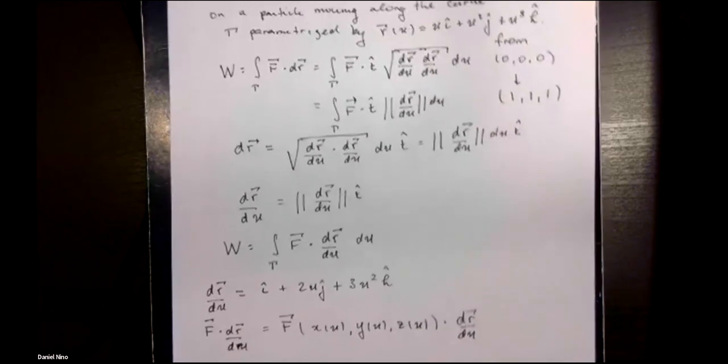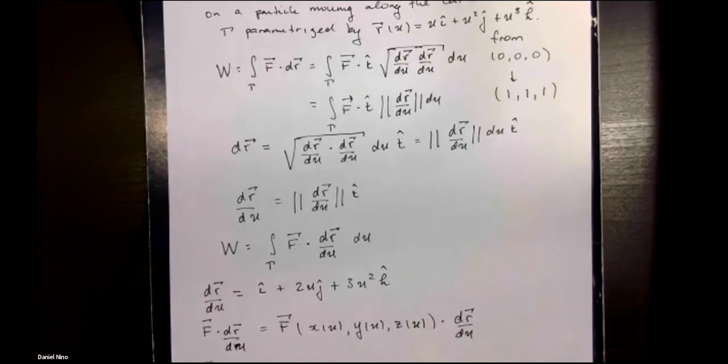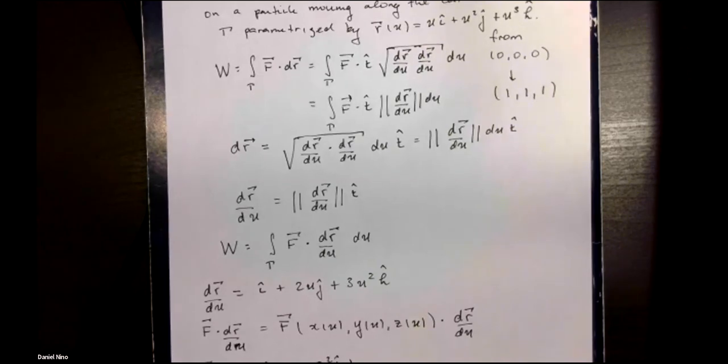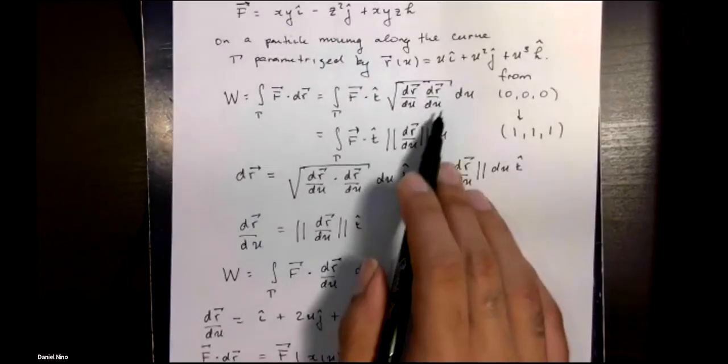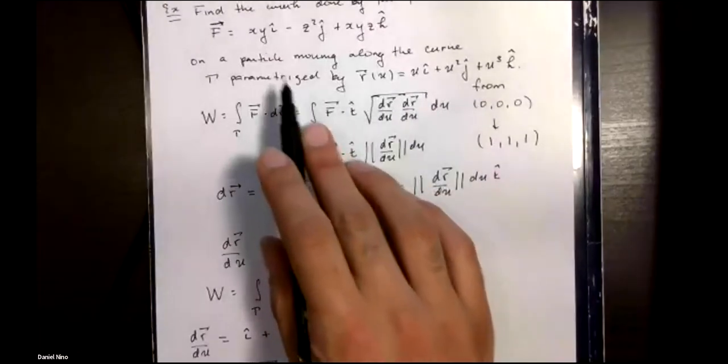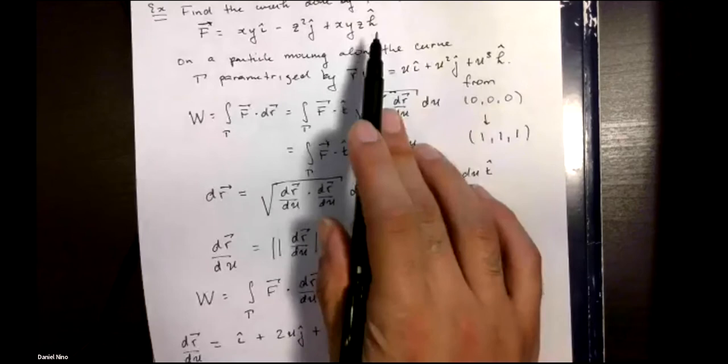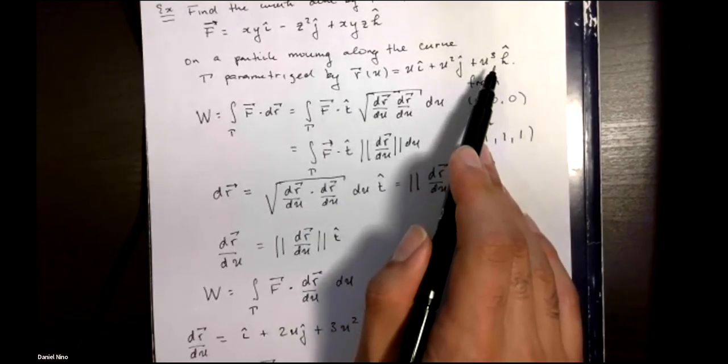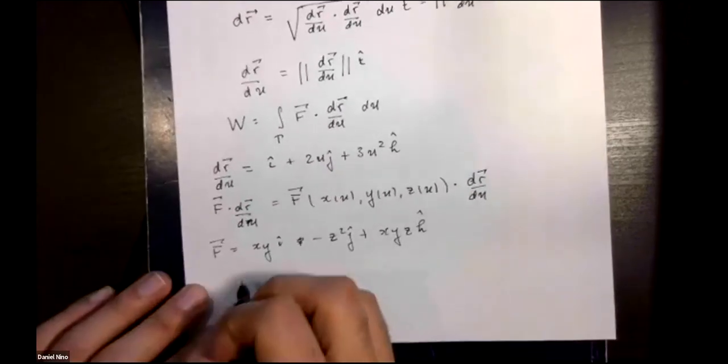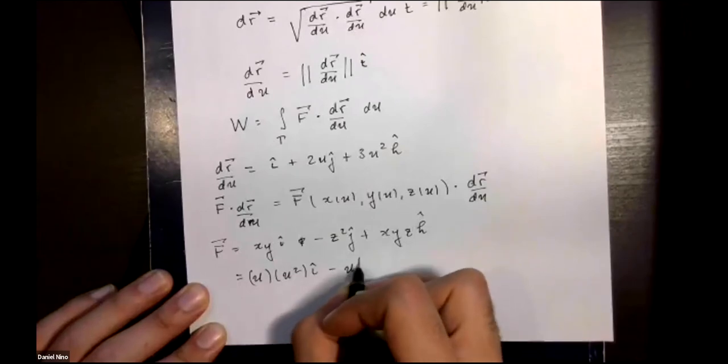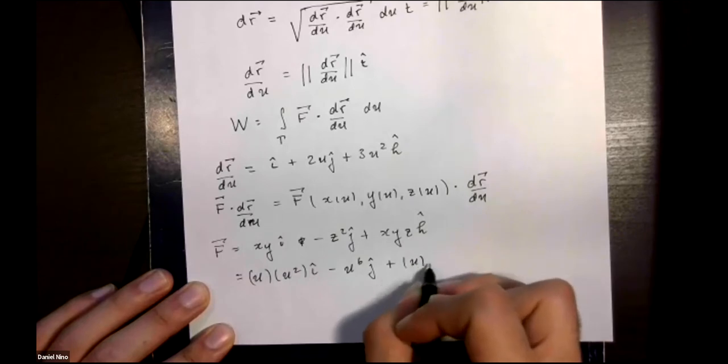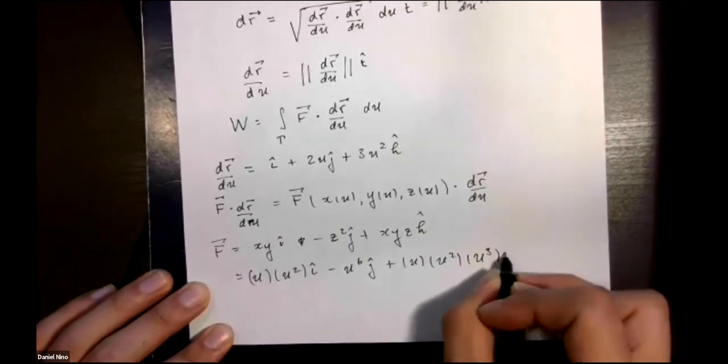This is our force over here. Wherever you see an x you need to replace that by u, wherever you see a y you need to replace that by u squared, and whenever you see a z you need to replace that by u cubed because that's our parametric parametrization for our curve. So this becomes u, u squared, u to the 6, u, u squared, u squared, u cubed k hat.